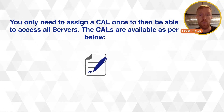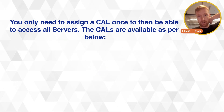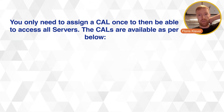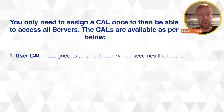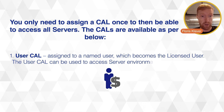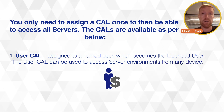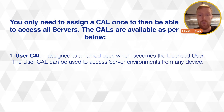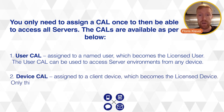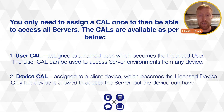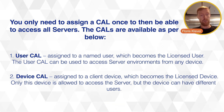You need to assign a client access license once to then be able to access any and all servers. CALs are available in two flavors: the user CAL, which is assigned to a named user — it's not a concurrent thing; Microsoft doesn't have concurrent licensing models — or a device CAL, which you assign to a client device, which then becomes a licensed device.